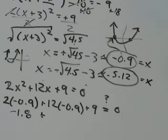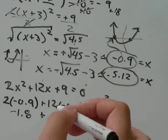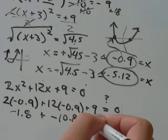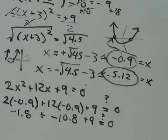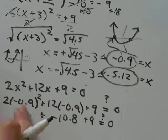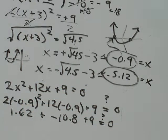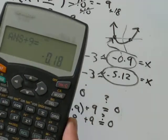2 times negative 0.9, I get is about negative 1.8 plus 12 times negative 0.9 is about negative 10.8 plus 9. Does that still equal 0? So negative 1.8 plus negative 10.8 plus 9. Oops, sorry, this was squared. That's why I was confused. Negative 0.9 squared times 2. Sorry, that should have been 1.62. 1.62 minus 10.8. I get that these two simplify to be about negative 9.18. So if I add on 9, I get negative 0.18.